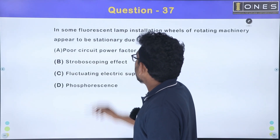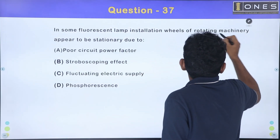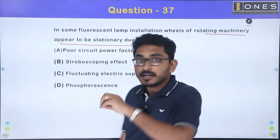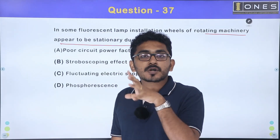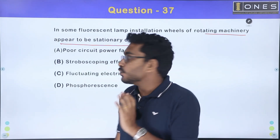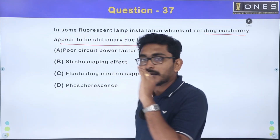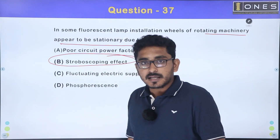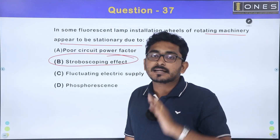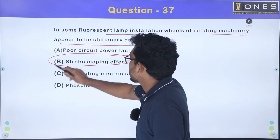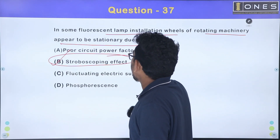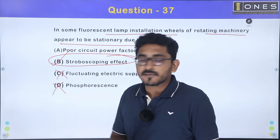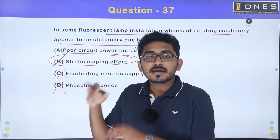Next question: in some fluorescent lamp installations, wheels of rotating machinery appear to be stationary. This is due to the stroboscopic effect. The fluorescent lamp effect makes rotating machinery appear stationary. The correct answer is the stroboscopic effect.